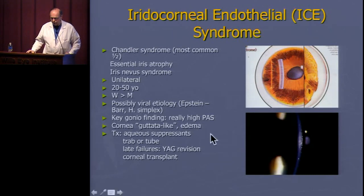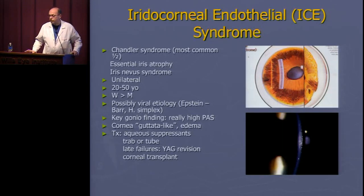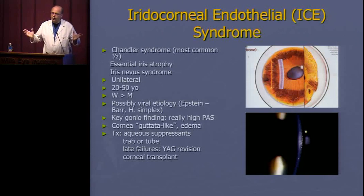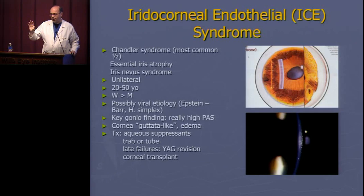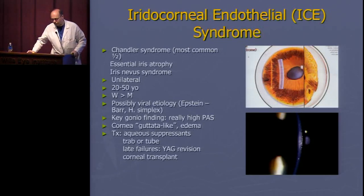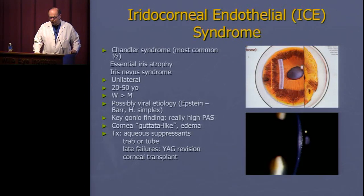Interestingly, if a trabeculectomy is functioning well with good pressure control for years and then pressure suddenly spikes — from 10 to 38 mmHg with a great-looking bleb — the explanation is that the ICE syndrome endothelial membrane has covered the sclerostomy. Using a YAG laser to blast through the hole created by the trabeculectomy can almost immediately restore bleb function. This is one of the rare instances where internal YAG laser revision can restore filtration bleb function. Due to corneal abnormalities, many ICE syndrome patients eventually require corneal transplant.